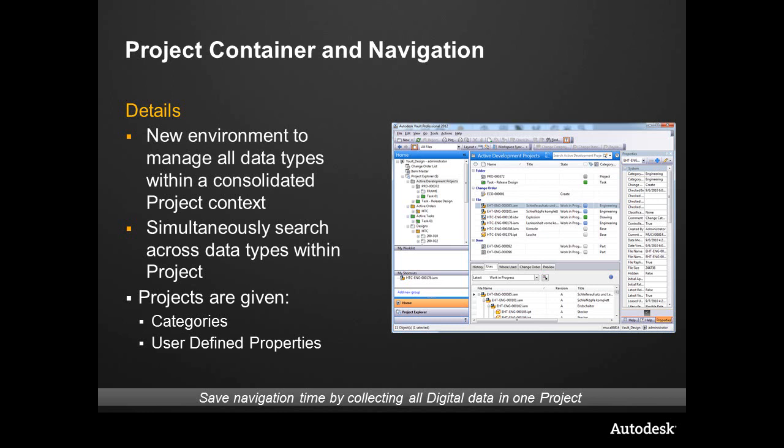This super folder has categories. It can have lifecycle, user defined properties, and security — everything that folders used to have, plus more. This allows you to search across it. When you put user defined properties on a particular folder, we can search on that and the search results will reveal items, ECOs, files, and now folders. Projects are these super folders and they are given categories so we can sort, group, and add intelligent information to an otherwise empty folder.